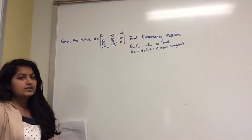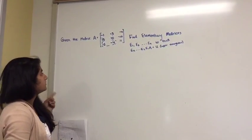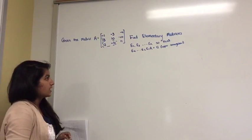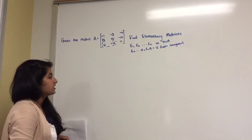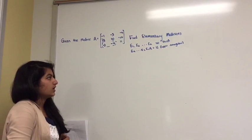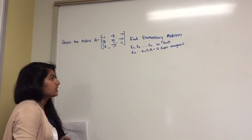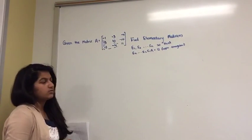Hi, my name is Sonia Farid, and today I'm going to solve this problem. It says, given the matrix A, find elementary matrices E1, E2, to EK, so that EK times E2, E1, A equals U.